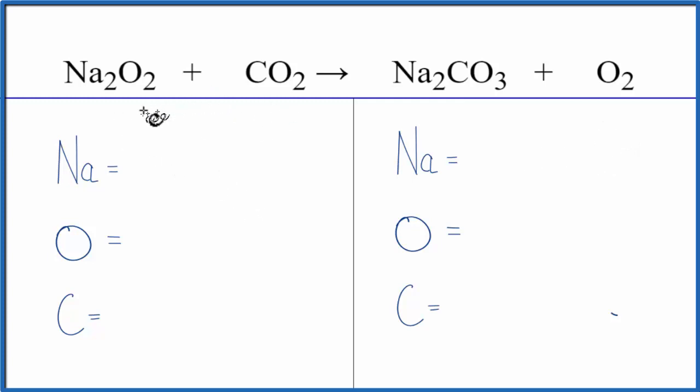So to balance the equation, we'll count all the atoms up. We have two sodium atoms, two oxygen atoms. Be careful, there's two here. So we have a total of four and we have just the one carbon.